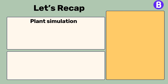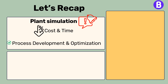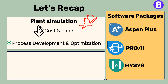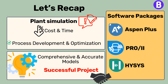Plant simulation is an indispensable activity carried out by a process engineer, offering numerous benefits such as reducing the time and cost associated with process development and optimization. Common process simulation software packages such as Aspen Plus, Pro/II, and Hysys provide process engineers with comprehensive and accurate models of the plant and its processes, which serve as the foundation for a successful project.